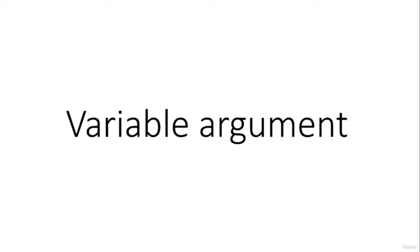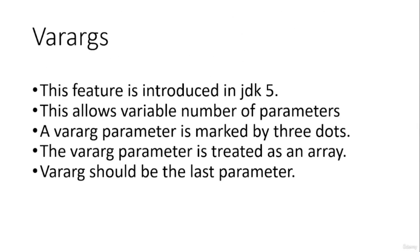In this final lecture of this section, we will discuss variable arguments. Variable arguments was introduced in JDK version 5. It is a feature which allows a variable number of parameters to a particular method. We denote a variable argument parameter with three dots followed by the parameter name.